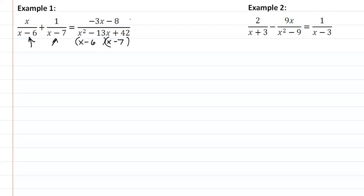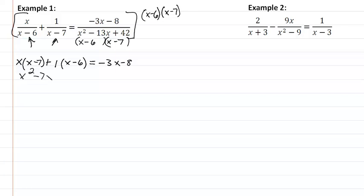So that means that our LCD for this is going to be x minus 6, x minus 7. We are going to multiply that through. So we are going to multiply each numerator by the missing factor. So we have x times x minus 7 plus 1 times x minus 6 equal to negative 3x minus 8. So we get x squared minus 7x plus x minus 6 equal to negative 3x minus 8.